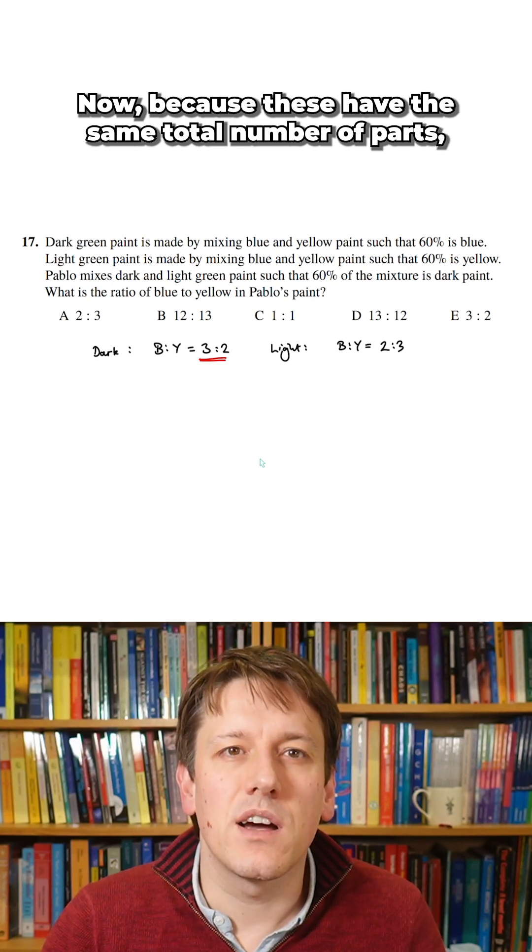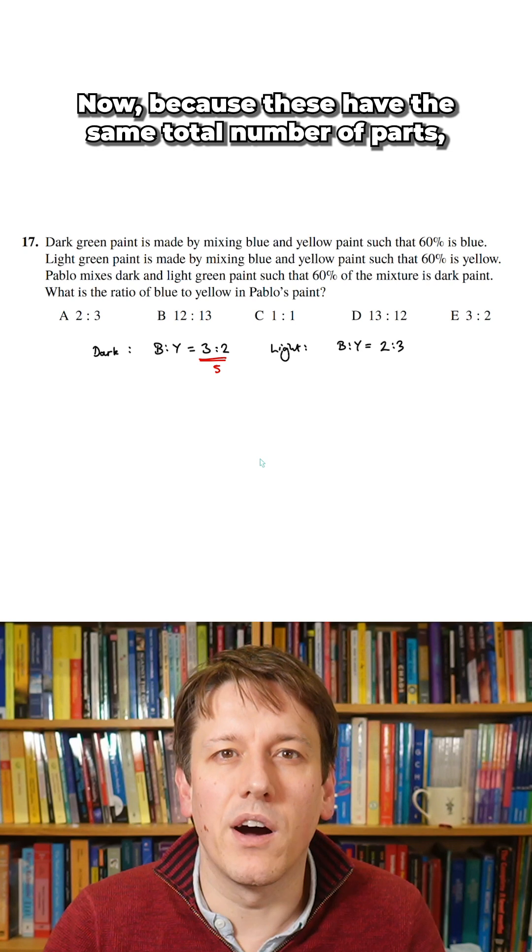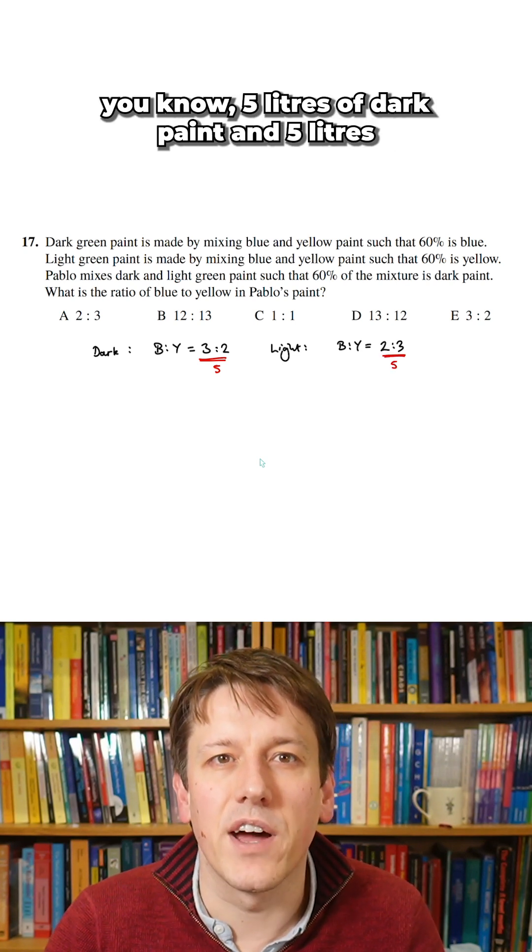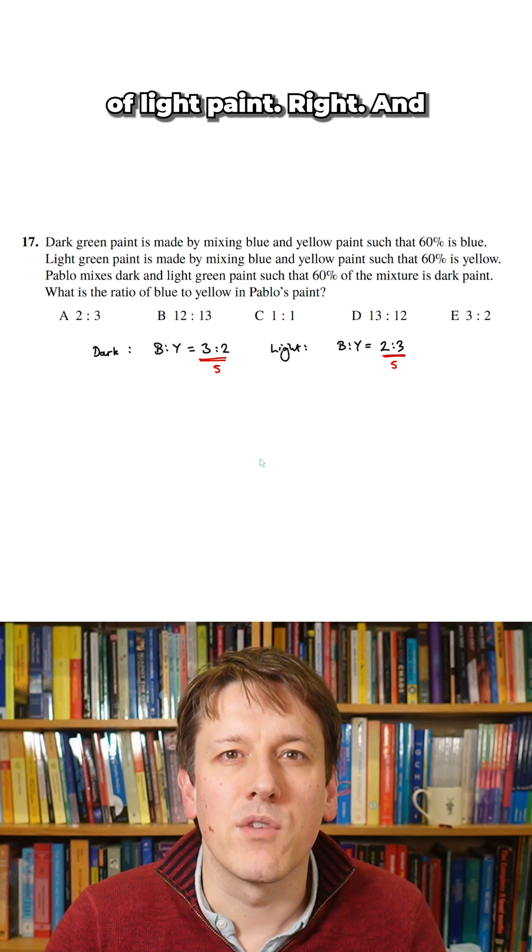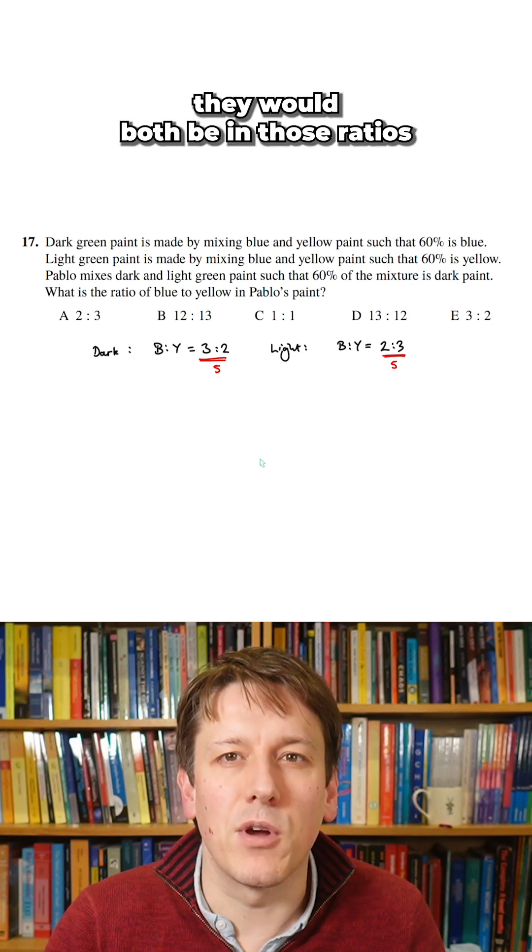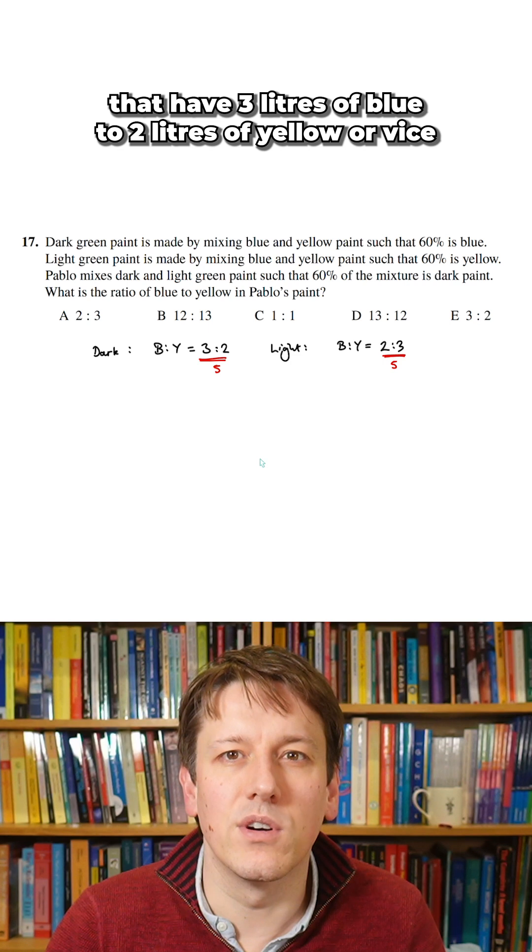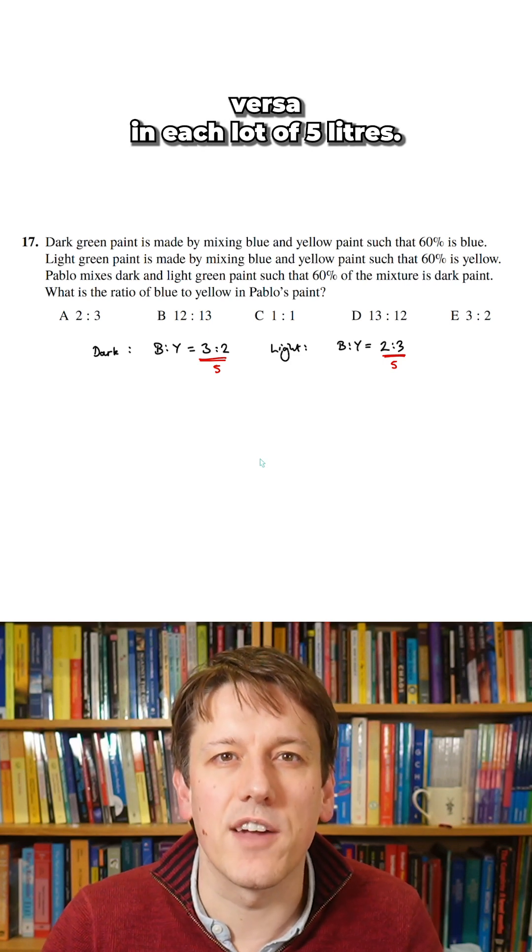Now because these have the same total number of parts, we can think, imagine this is just 5 liters of dark paint and 5 liters of light paint. And they would both be in those ratios that have 3 liters of blue to 2 liters of yellow or vice versa in each lot of 5 liters.